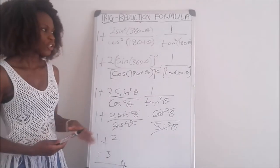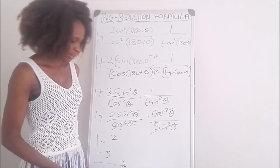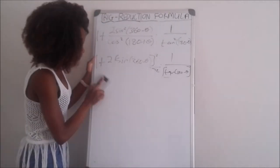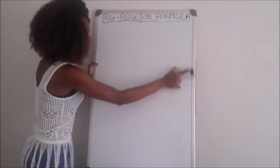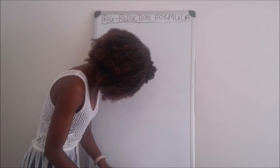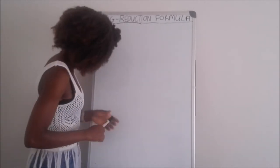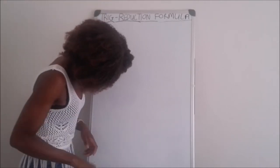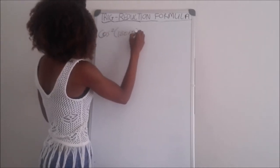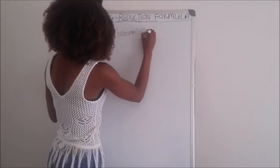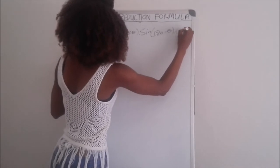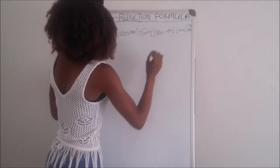There are many ways of solving these questions. Let's do another example on reduction formulas. The second example is: cos squared (180 plus theta) multiplied by sine (180 minus theta) multiplied by tan (180 plus theta).